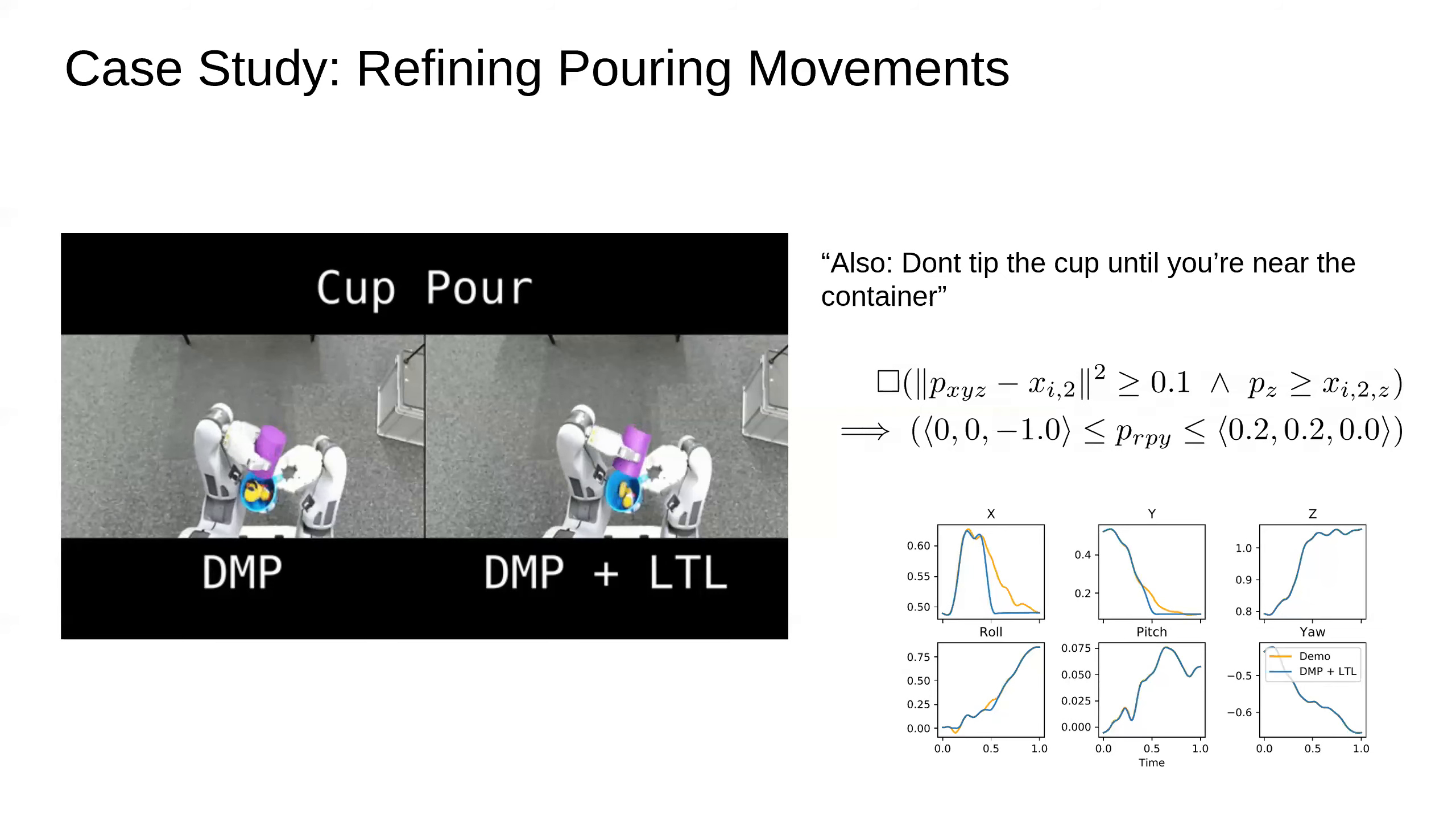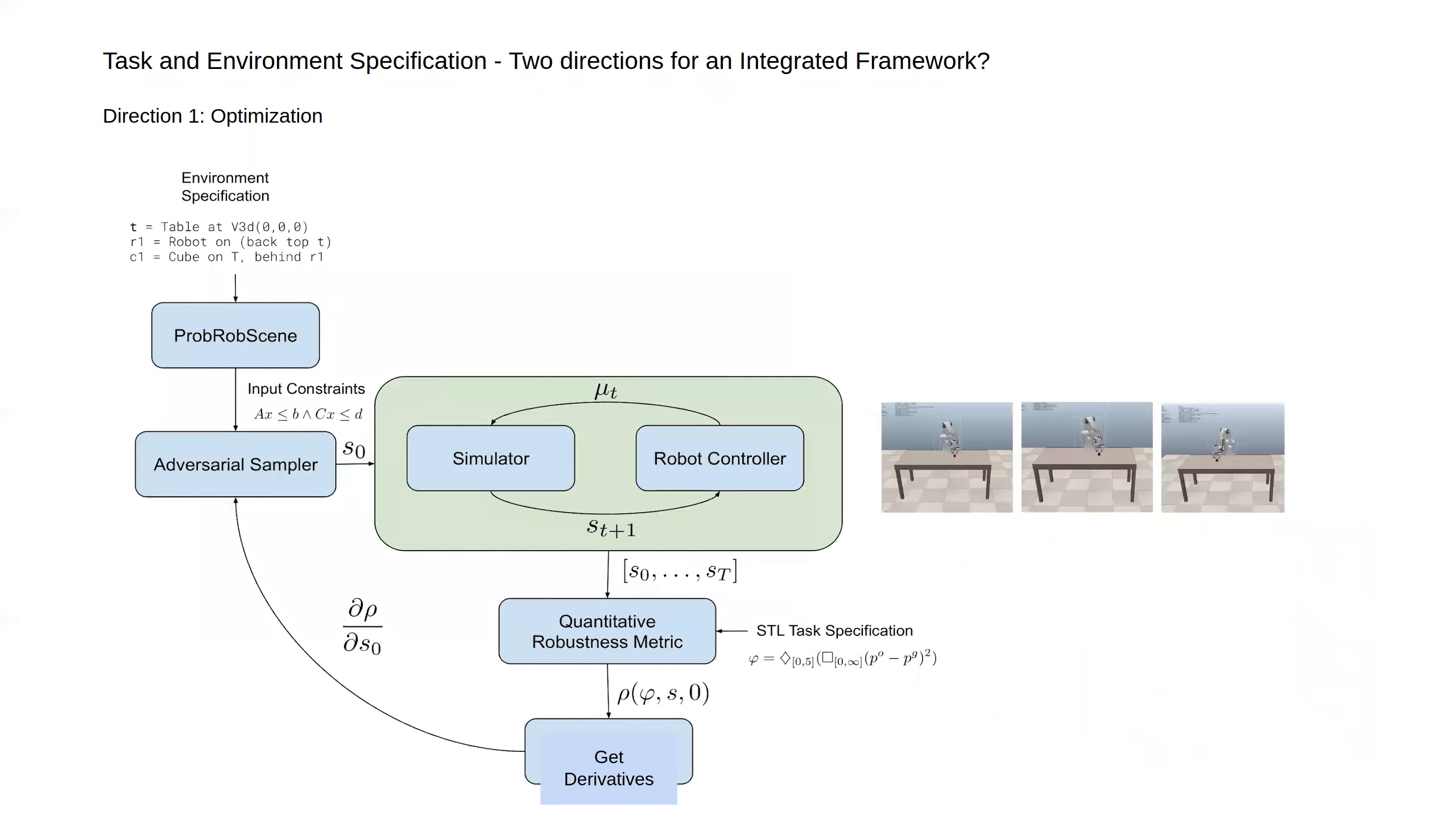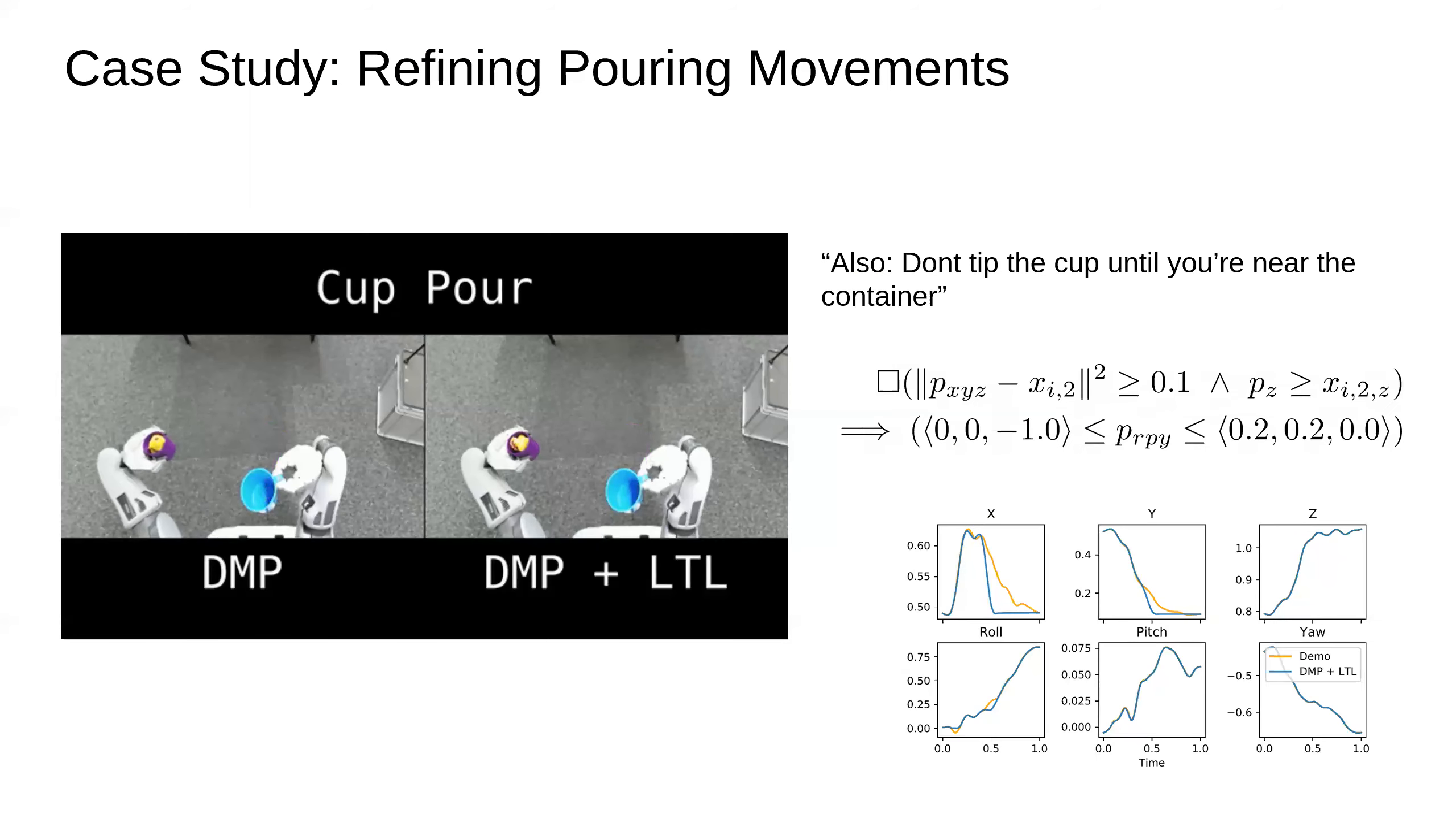I've put a case study here to show this in action. We trained this cup pour using Jordan's demonstrations. This one on the left, the DMP one, is just with the examples. When it tries to generalize to a slightly different position, it ends up tipping the cup prematurely because it doesn't have a sense of what it's trying to do with the pouring. Although the tipping motion is complicated, the constraint we want it to conform to, which is don't tip the cup until you're above the constraint, we can just write that down. So this DMP plus LTL gets it right. You can see from the graphs, the blue one is with the LTL and the orange one is without. It slightly delays it for a second and brings forward some of the X and Y coordinates so it's within there earlier, enforcing a delay by the combination of those two things.